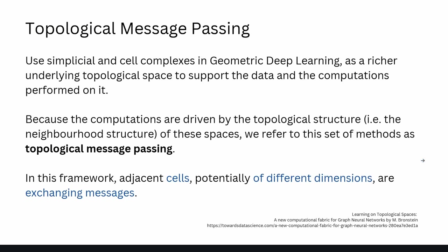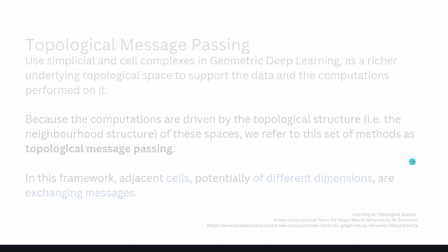Message passing was our classical GNN workhorse. Now we take a step from message passing to topological message passing. If we use simplicial and/or cell complexes in geometric deep learning as a richer underlying topological space to support the data and computations, we have computation driven by the topological structure — the neighborhood structure of these spaces. We refer to this as topological message passing: message passing in a higher dimensional topological space, where adjacent cells of potentially different dimensions exchange messages.